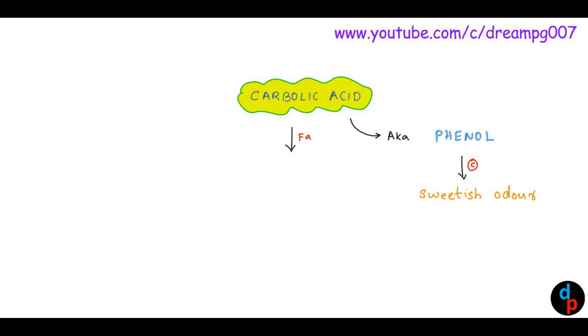What is the fatal dose of Carbolic Acid? It is 10 to 15 grams. The fatal period of Carbolic Acid is about 3 to 4 hours.